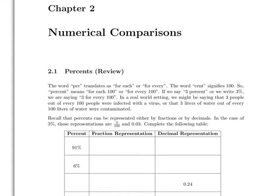If we say 3% or we write 3%, we're saying 3 for every 100. In a real-world setting, we might be saying that 3 people out of every 100 are infected with a virus, or that 3 liters of water out of every 100 liters of water are contaminated.